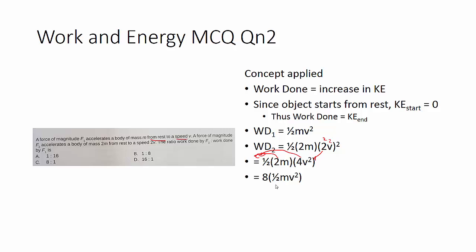First, the purpose of doing this is because I want to change this so that half mv squared was the original work done 1, as illustrated over here. So then, of course, we can find the ratio of work done, because it's 8 times of work done number 1.